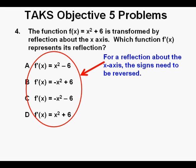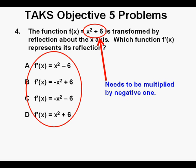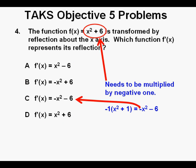For a reflection about the x-axis, all signs of the function need to be reversed. In order to reflect this function, it needs to be multiplied by negative 1. And that would be f prime of x is equal to negative x squared minus 6. And that would make c our correct answer.